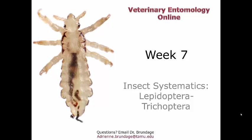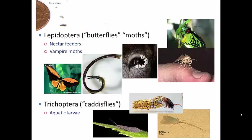Now we are going to end our investigation into insect systematics with these last two orders — the Lepidoptera and the Trichoptera. So the Lepidoptera are commonly known as the butterflies and the moths. Lepido comes from the word for scale, and ptera means wings.